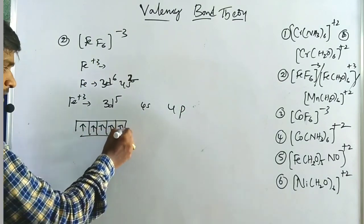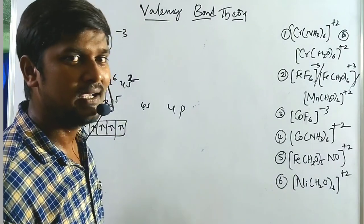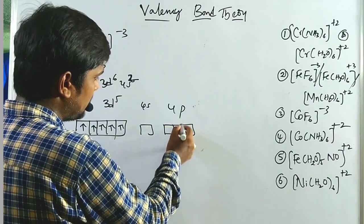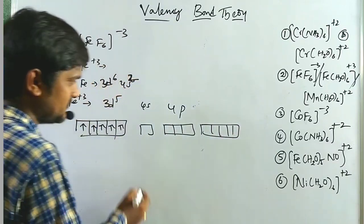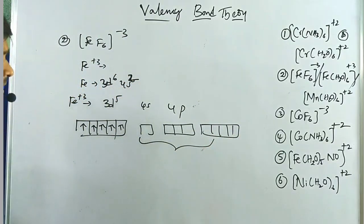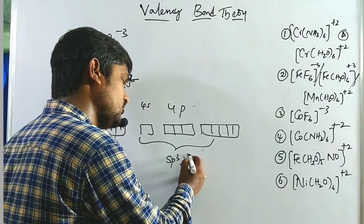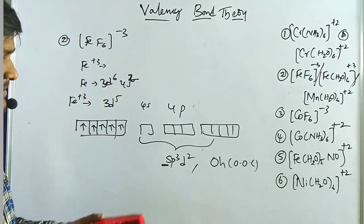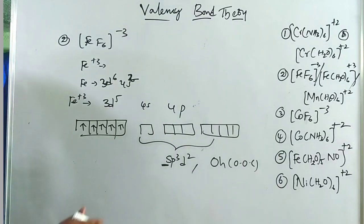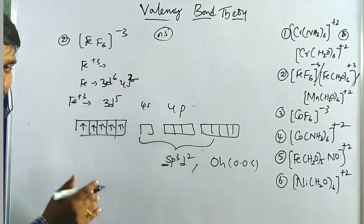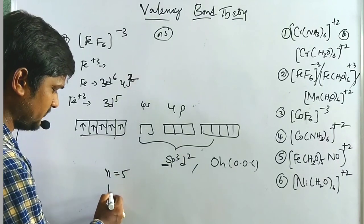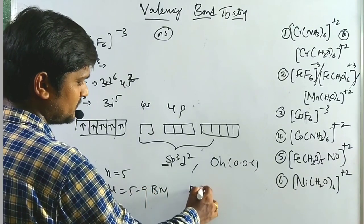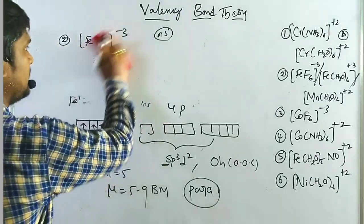With 5 electrons completely half-filled in 3d, and coordination number 6, we require 6 orbitals. These 6 orbitals hybridize to form sp³d² hybridization, giving an octahedral outer orbital complex, since hybridization starts with the highest principal quantum number s orbital (ns orbital). The number of unpaired electrons is 5, so μ ≈ 5.9 Bohr magnetons. It is a paramagnetic species.